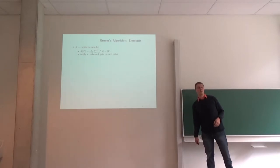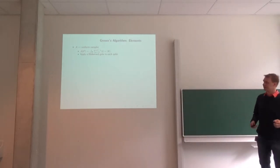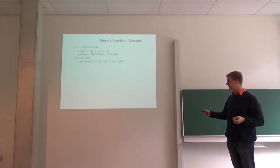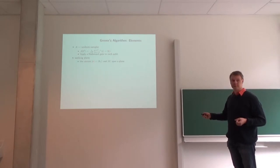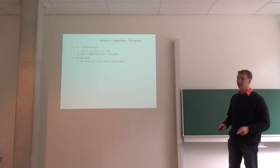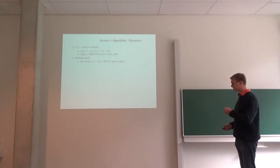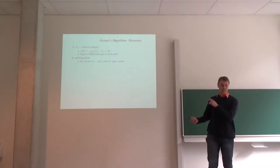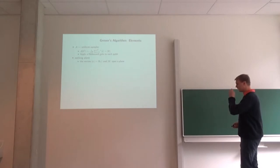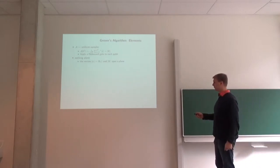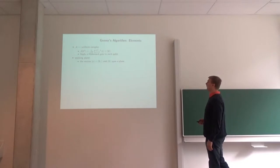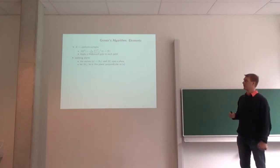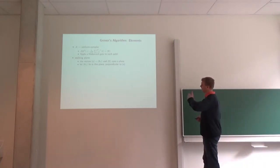We get this from the |0⟩ state by applying a Hadamard gate to each qubit. Psi is a vector, and A, the basis state associated with the solution, is also a vector. Two vectors that are different span a plane — let's call that the working plane. A is going to be the same as psi-1, and we also need psi-0, which is perpendicular to psi-1, because we're going to flip about psi-0.